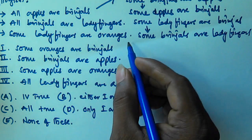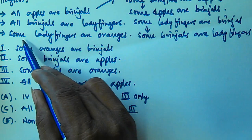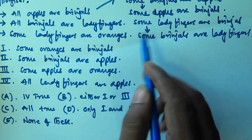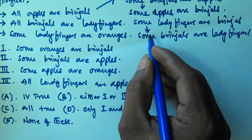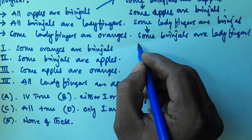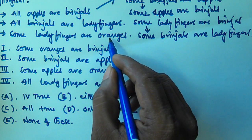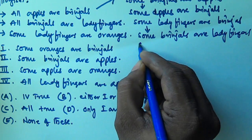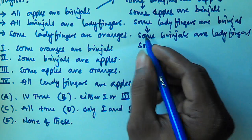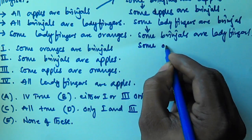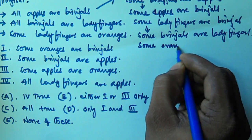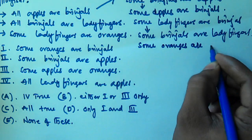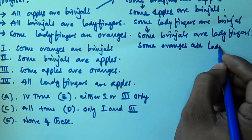From Statement 3 — Some ladyfingers are oranges — I can interchange oranges and ladyfingers. So from this third statement, Some oranges are ladyfingers.